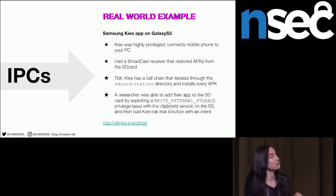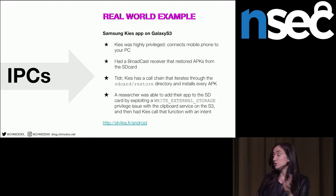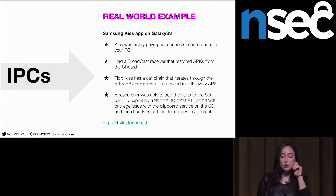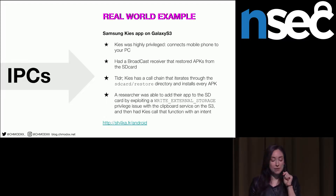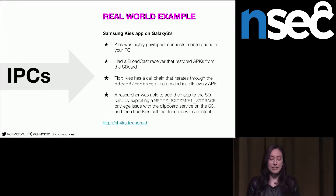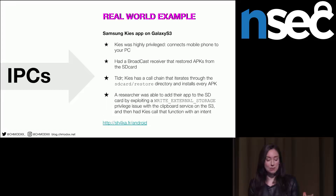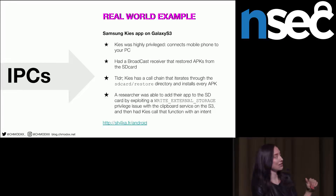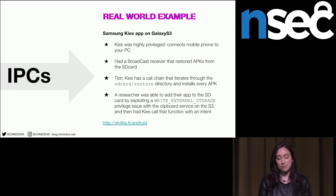Here's a fun real world example. The Samsung Kies app on the Galaxy S3 was super privileged — it connected your mobile phone to your PC and had a broadcast receiver that restored APKs from an SD card. A researcher was able to exploit a vulnerability in the clipboard service on the S3 with a write external storage privilege issue. They could copy a malicious application to the SD card, and then a call chain in the Kies application would install any APK in that SD card directory with the same provisions as Kies. That's terrifying.